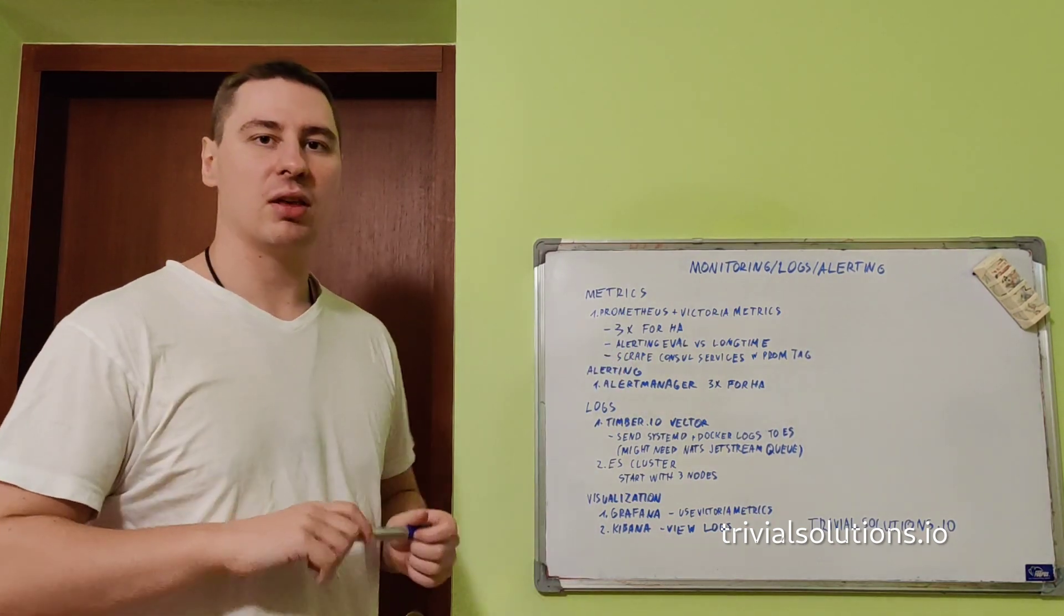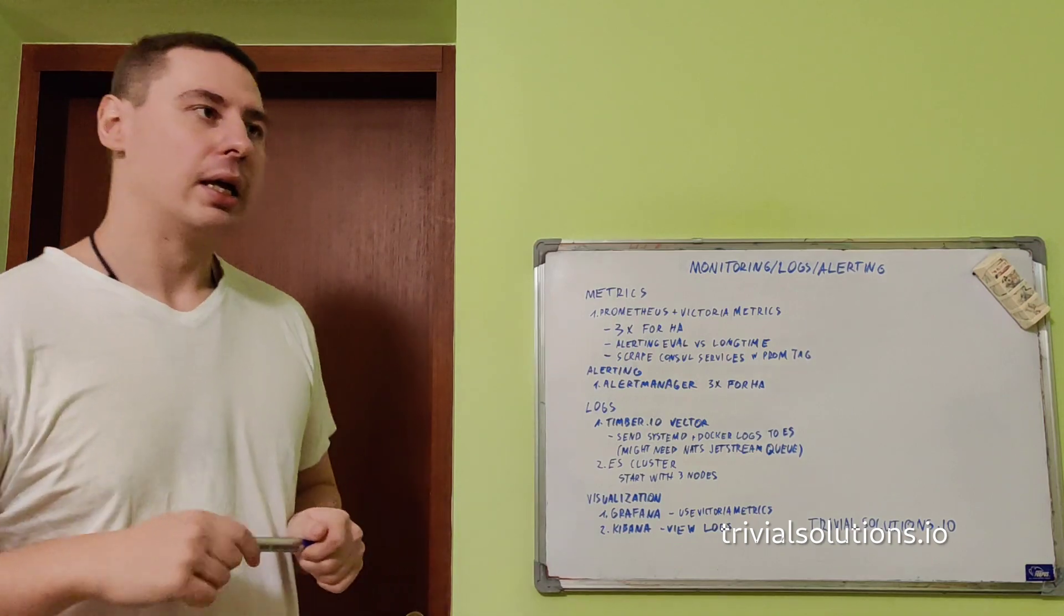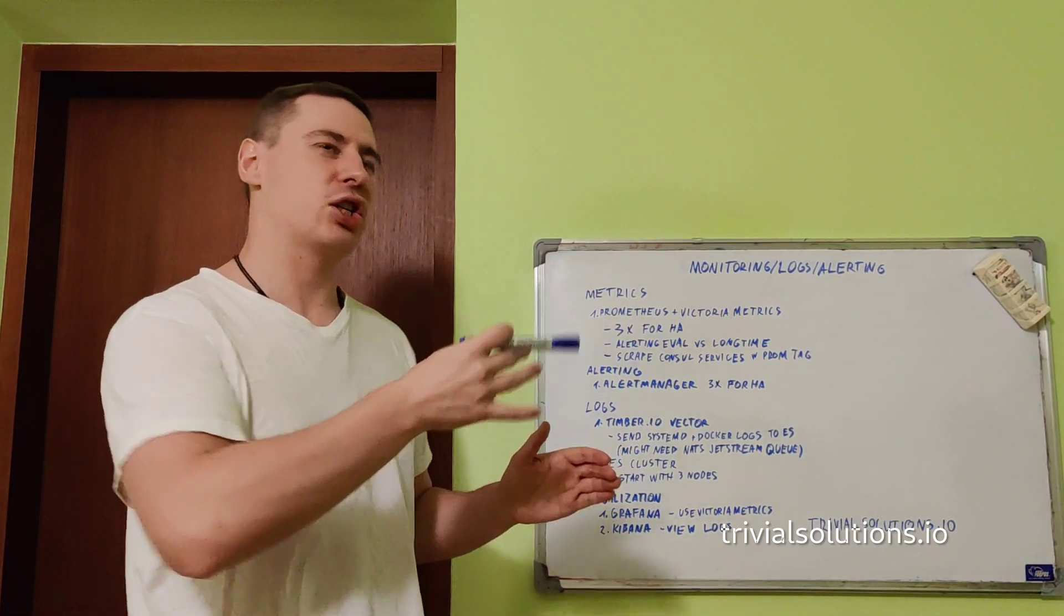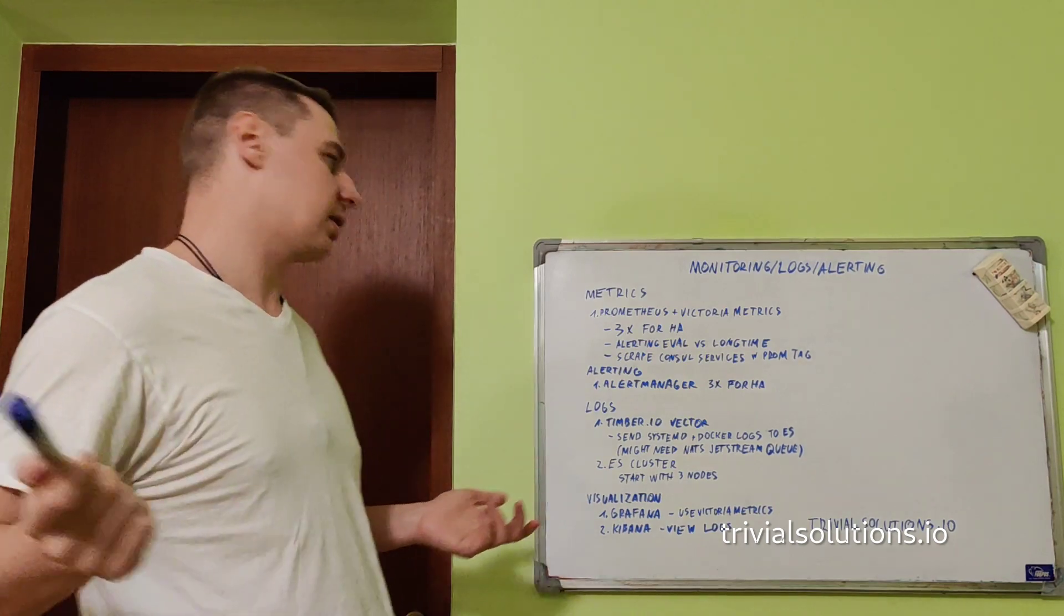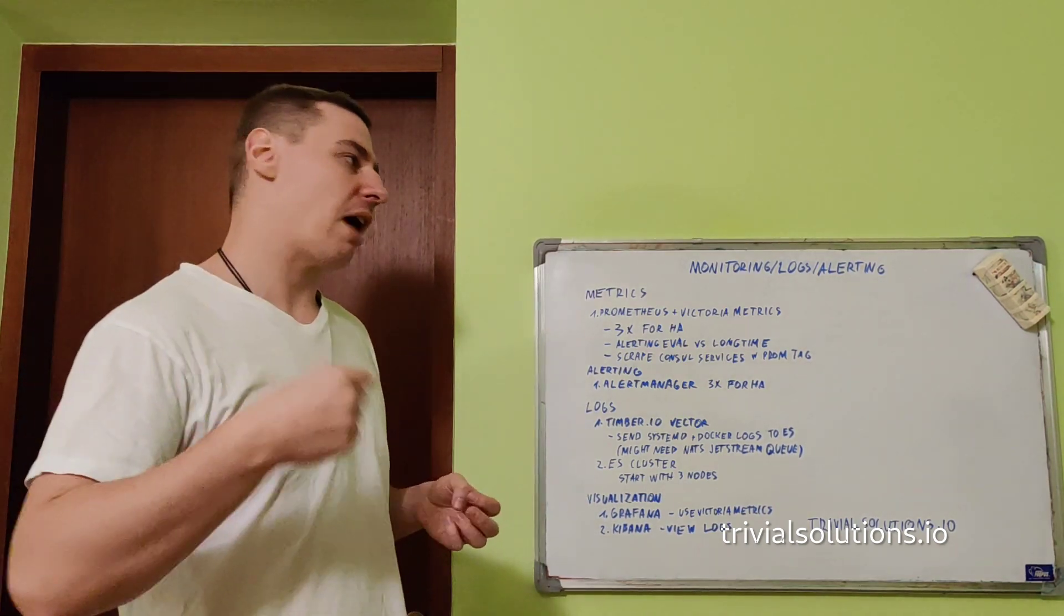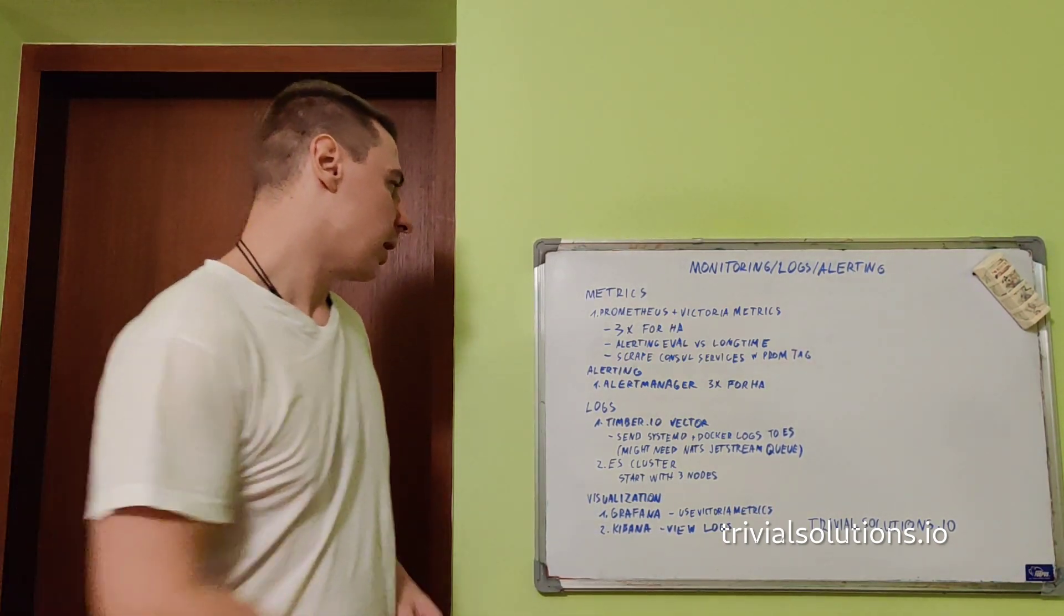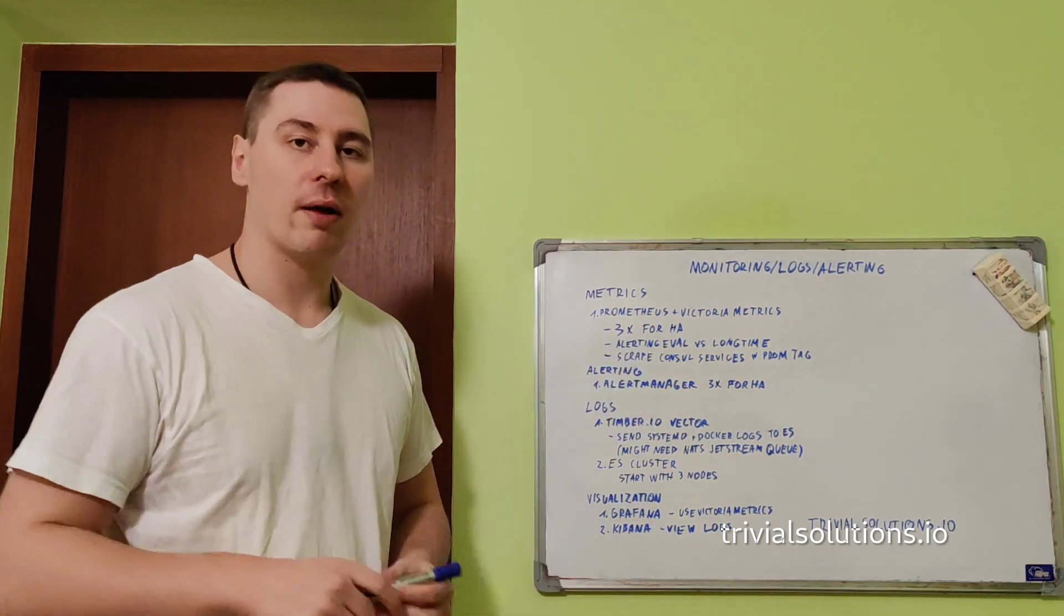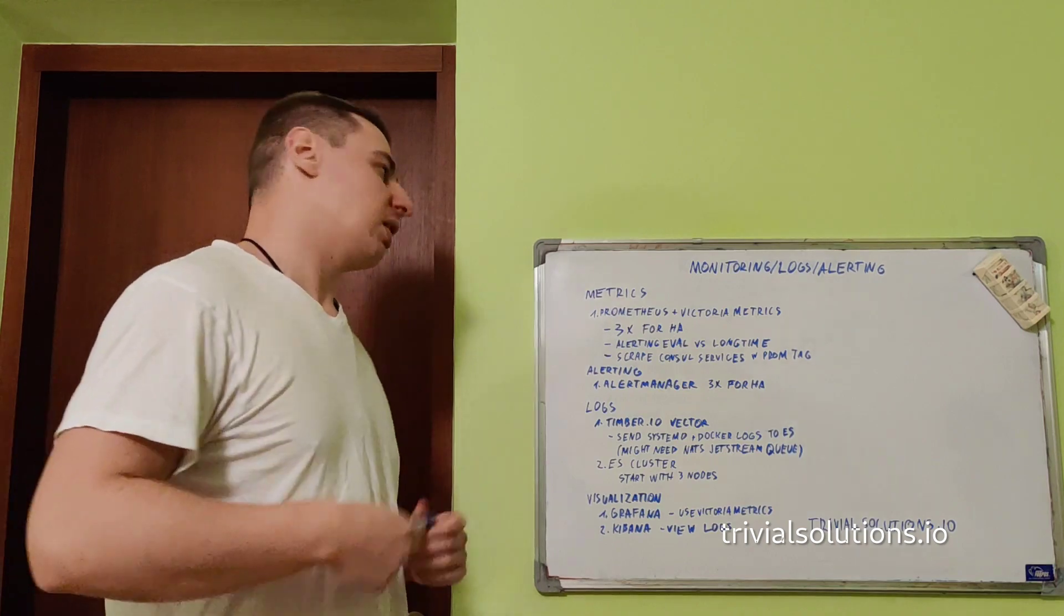For metrics, I use Prometheus and Victoria Metrics to collect system-wide metrics. Prometheus makes HTTP requests to slash metrics endpoints, collects the metrics, and gathers them into a database.